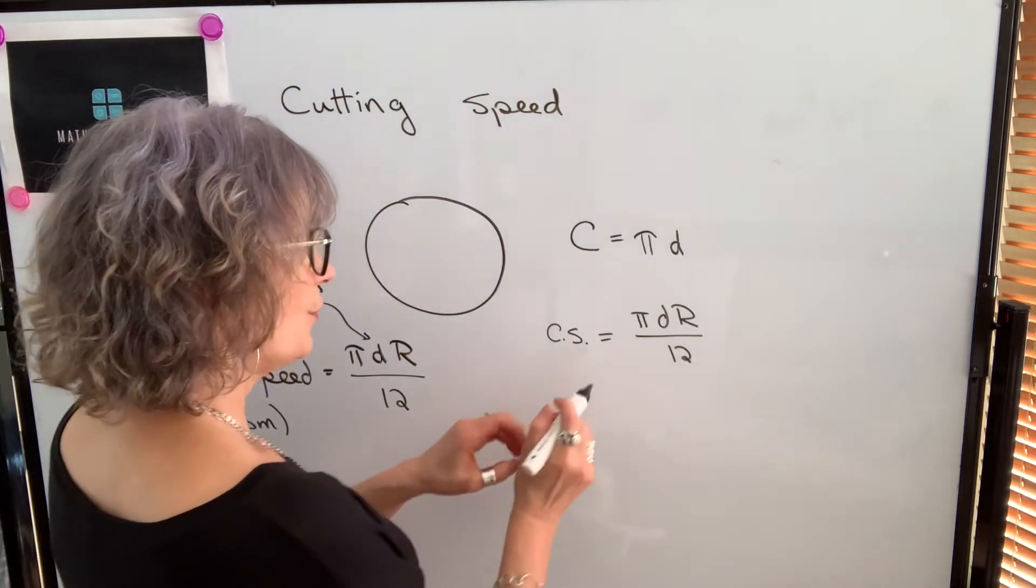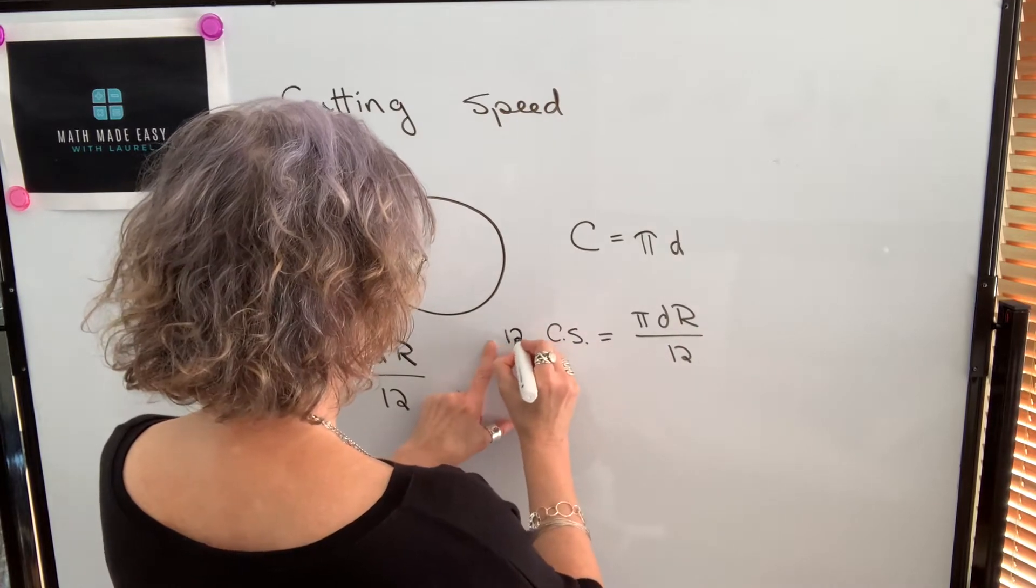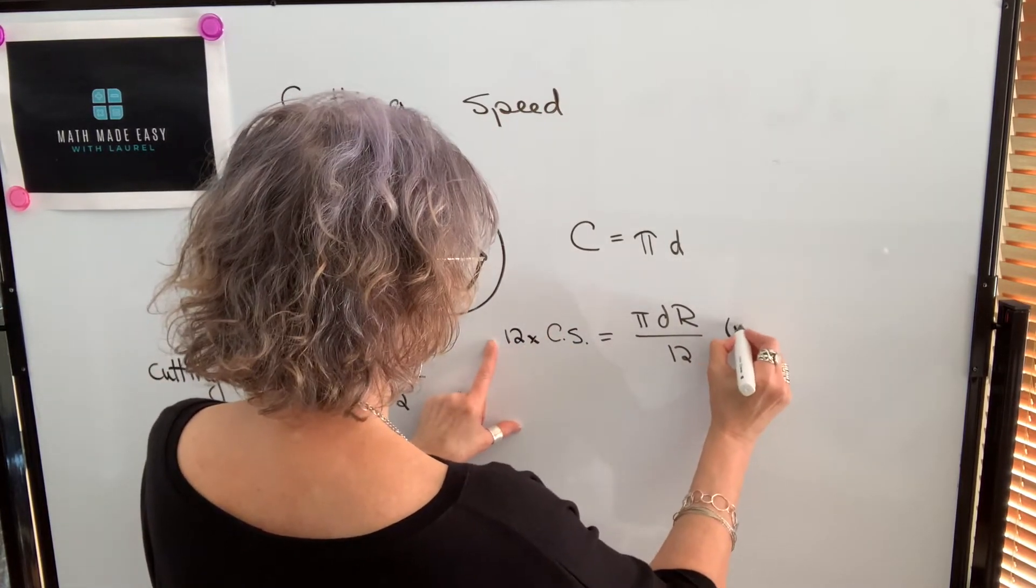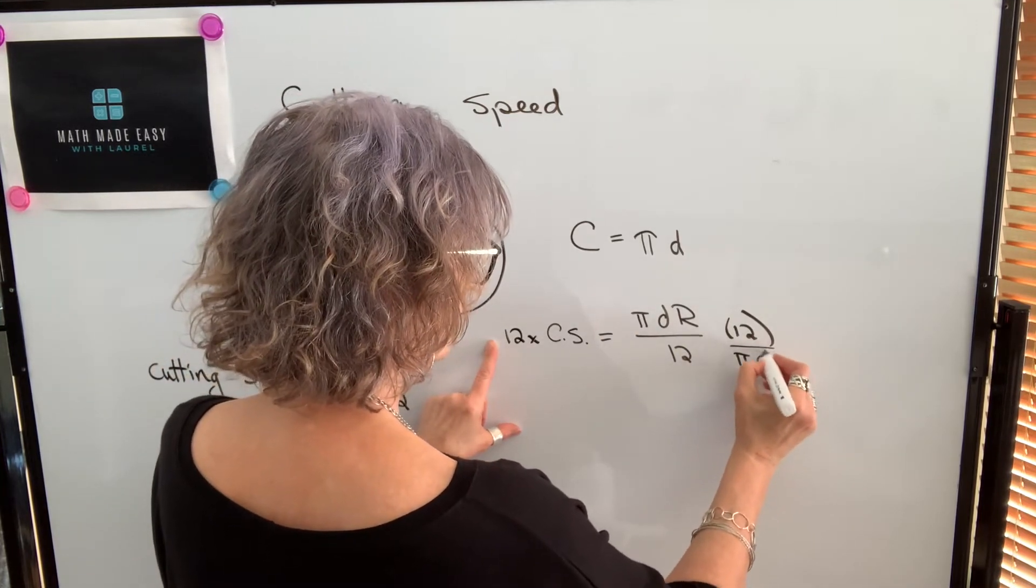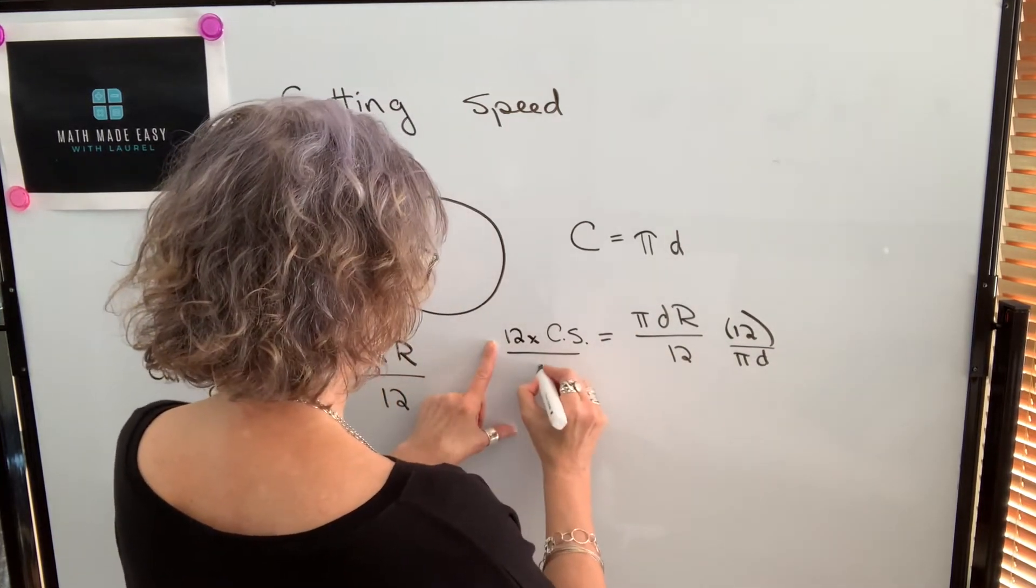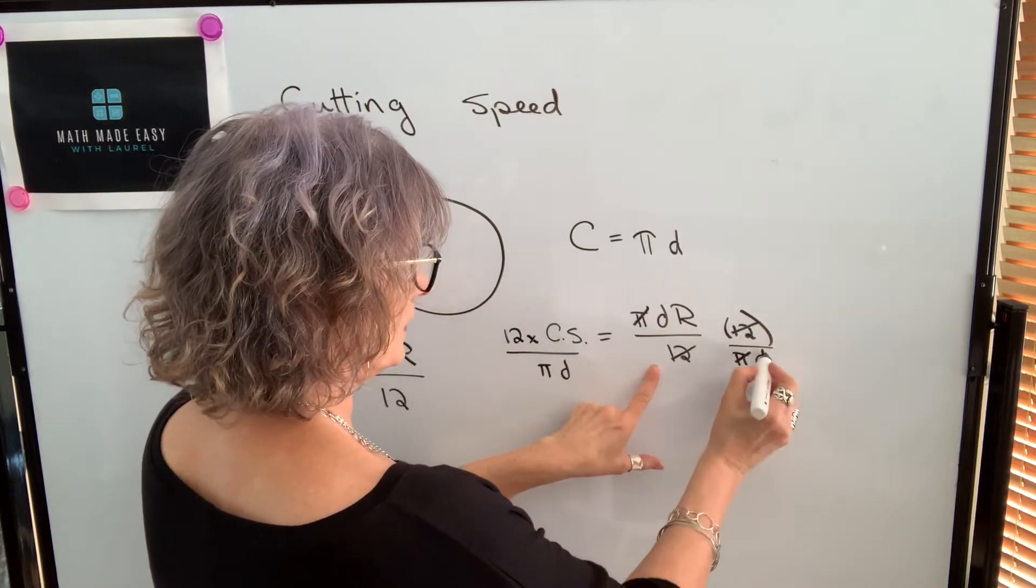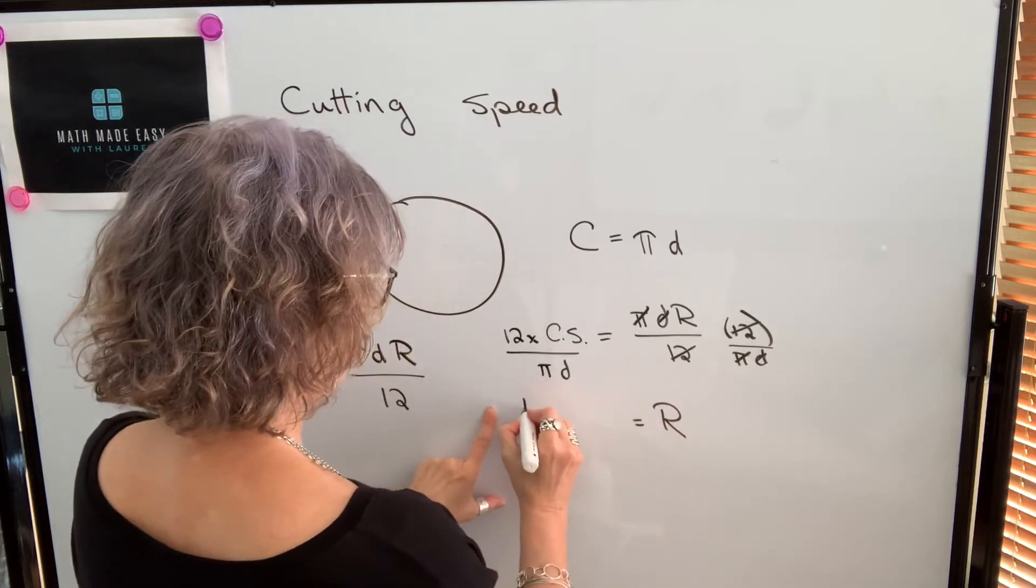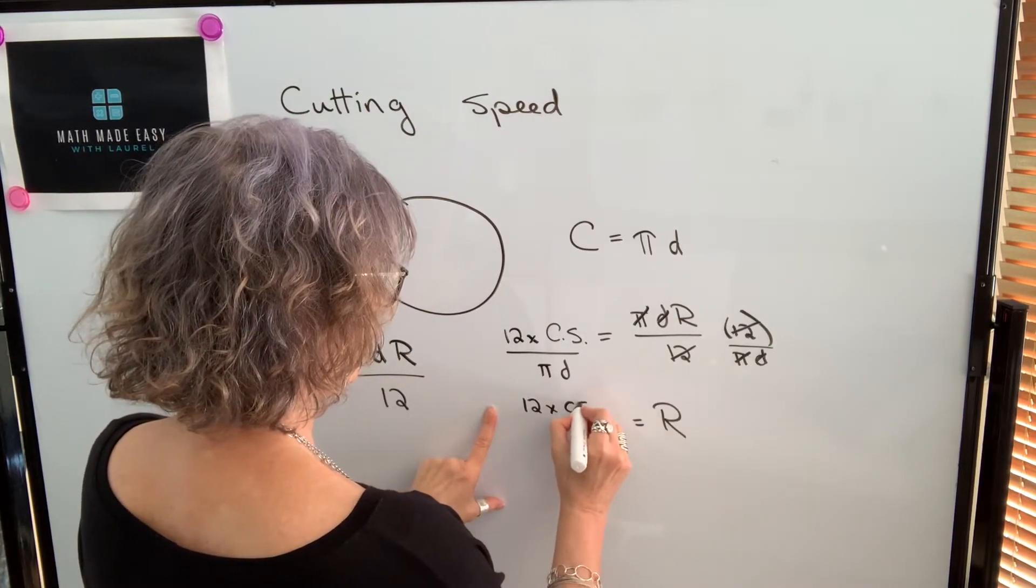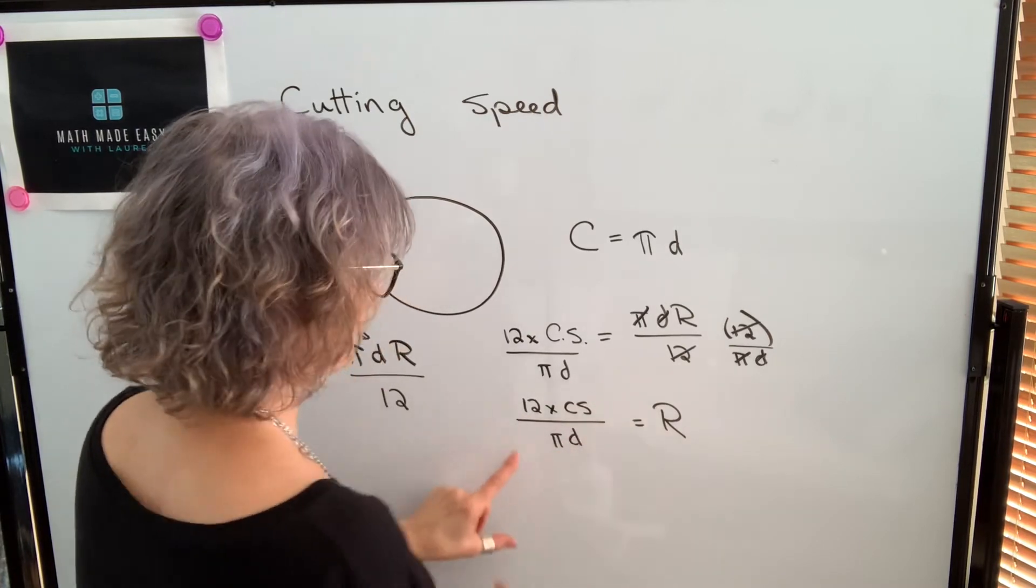The way that we can isolate r is to divide by anything that's being multiplied to r and multiply by anything divided into r. So we're going to multiply both sides by 12, and we're going to divide both sides by π times diameter. All of these numbers will cancel so that you'll get r by itself. So r will equal 12 times the cutting speed over π times the diameter.